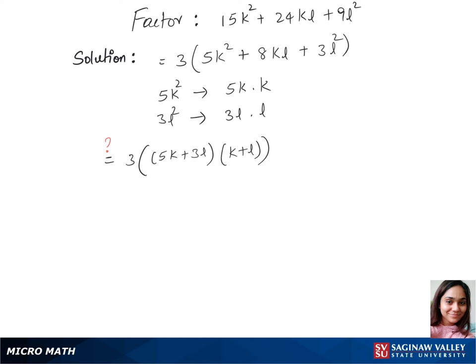We'll multiply this and cross check with our trinomial if it matches. So that's 3 times 5k square plus 8kl plus 3l square.